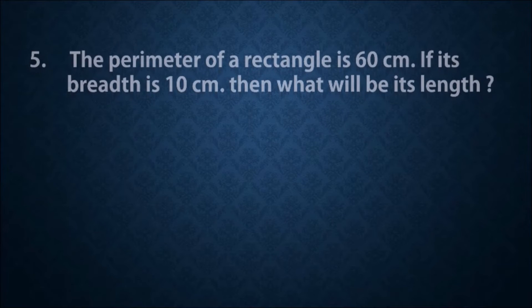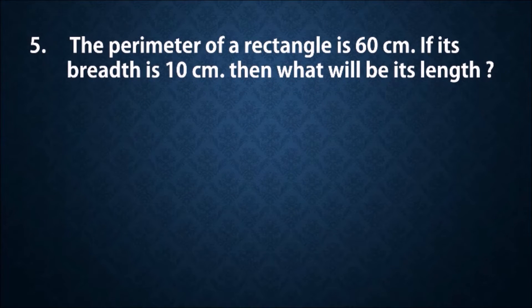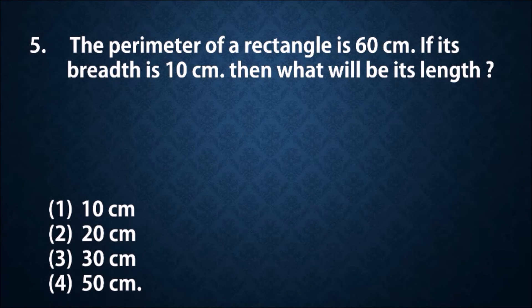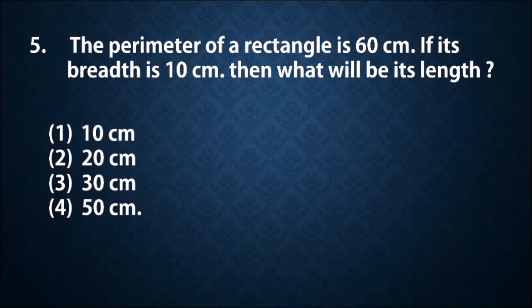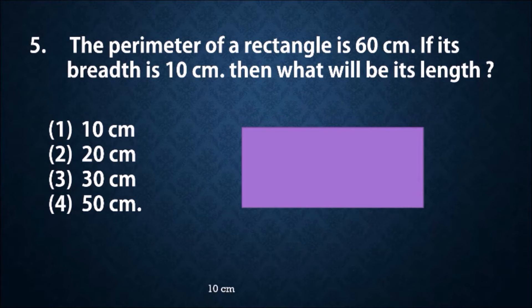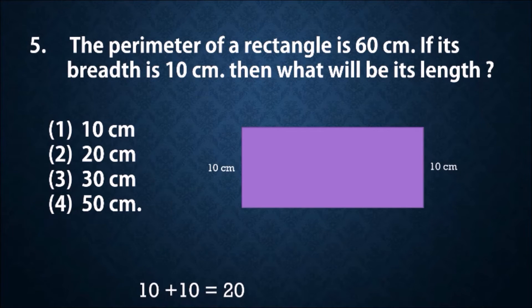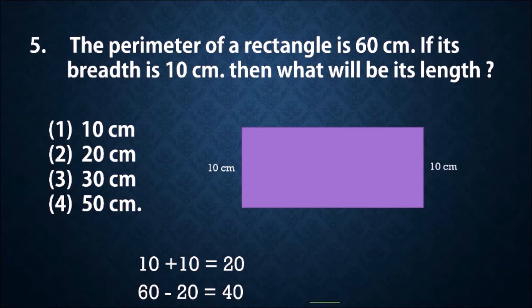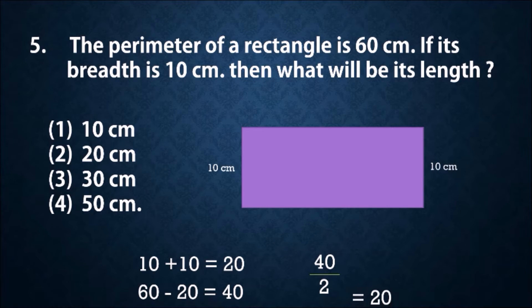Question number five: the perimeter of a rectangle is 60 centimeter. If its breadth is 10 centimeter, what will be its length? Options: 10 centimeter, 20 centimeter, 30 centimeter, or 50 centimeter. The breadth is 10 centimeter, so both breadths together equal 20. Perimeter is 60, so 60 minus 20 equals 40. Dividing 40 by 2 gives 20. Second option, 20 centimeter, is the correct answer.